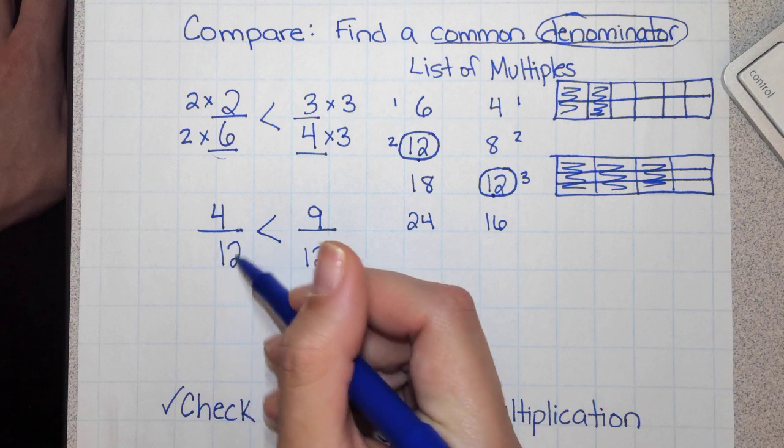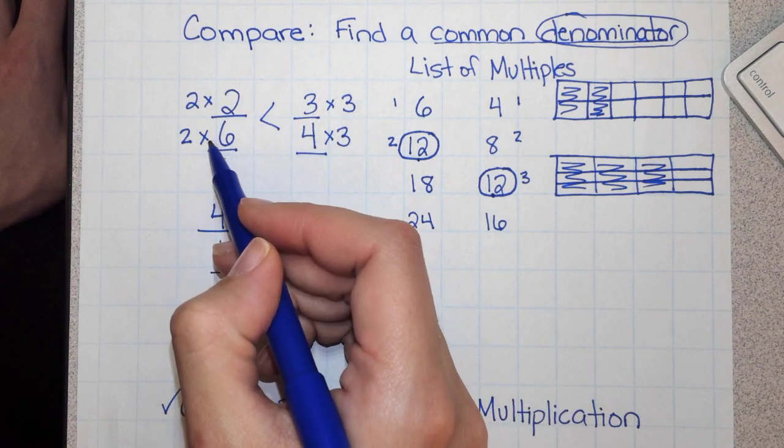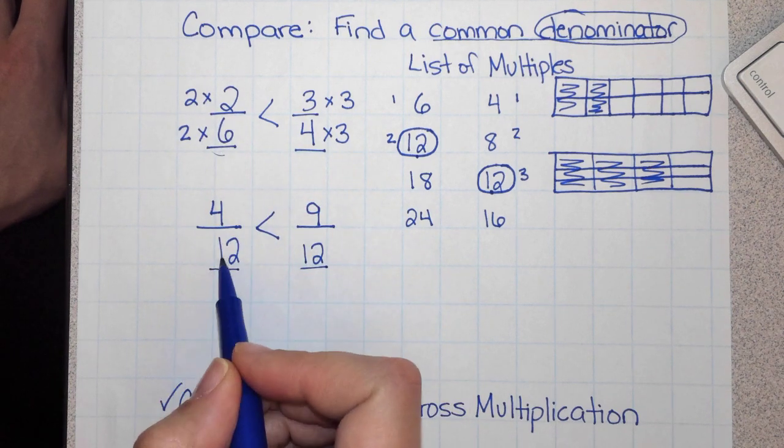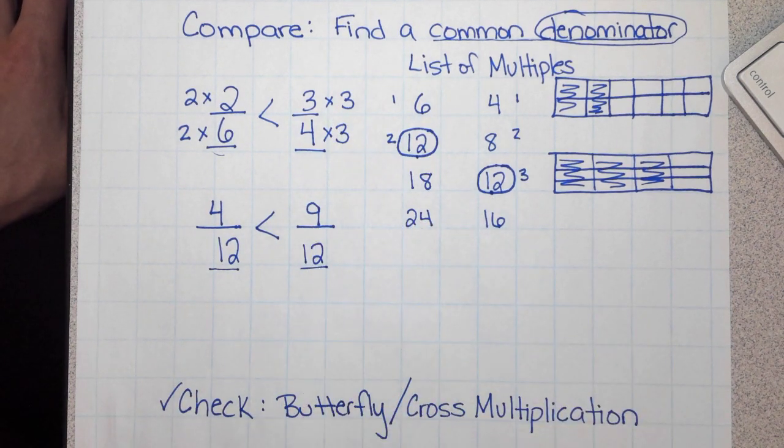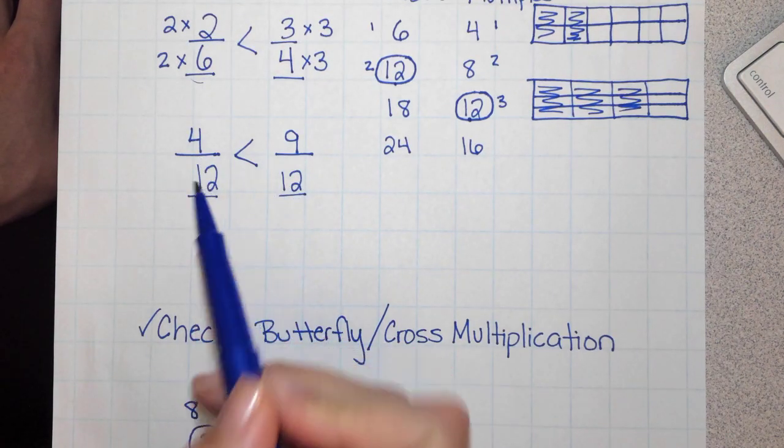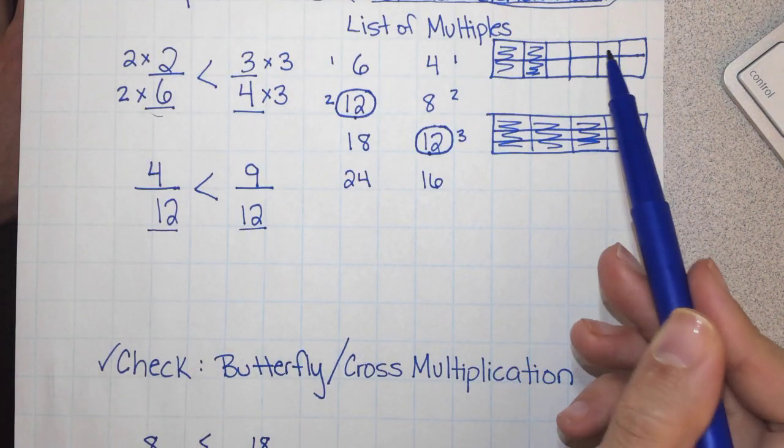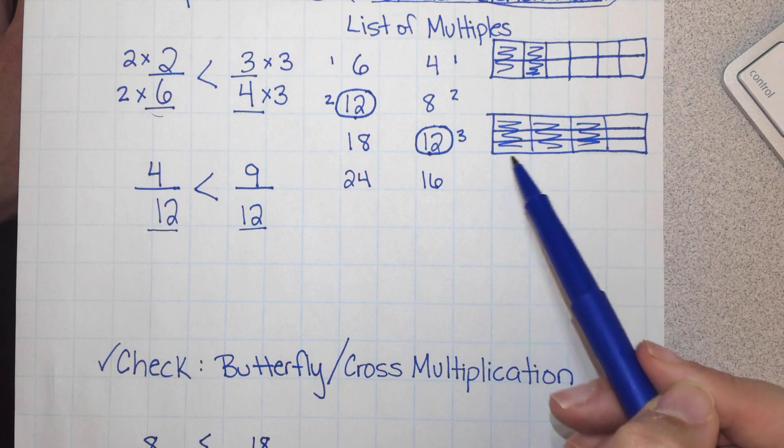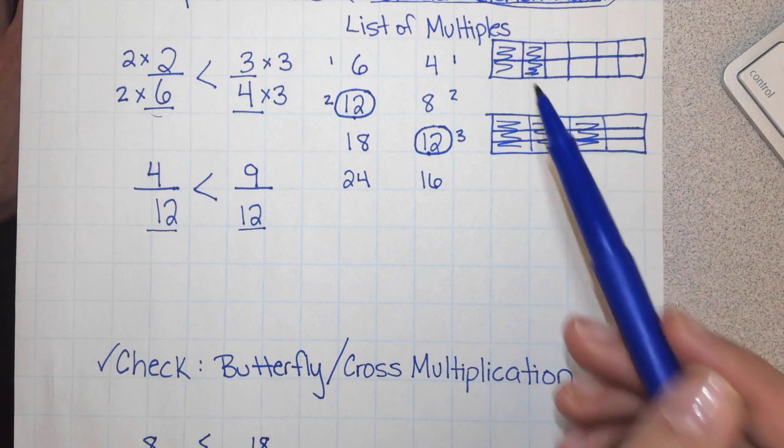Then I created equivalent fractions for each of my fractions using the denominator of 12. By multiplying by 2, I got 4 twelfths. By multiplying by 3, I got 9 twelfths. And then I was able to determine 9 twelfths was greater than 4 twelfths. I also was able to check my work with a shape model. And we can clearly see 9 twelfths is greater than 4 twelfths.